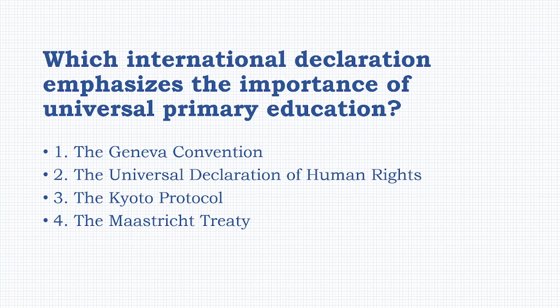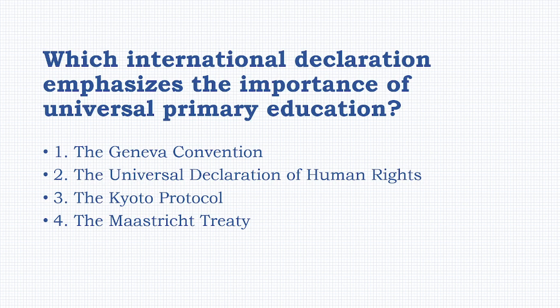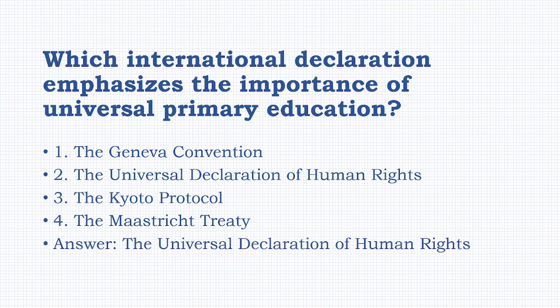Which international declaration emphasizes the importance of universal primary education? Options: the Geneva Convention, the Universal Declaration of Human Rights, the Kyoto Protocol, or the Maastricht Treaty. The answer is option B: the Universal Declaration of Human Rights.